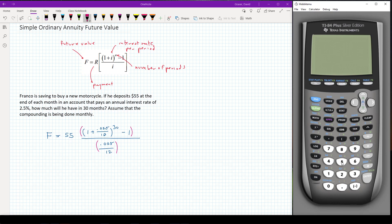So I'm going to start out and say 55 times big parentheses for the top, another set of parentheses, 1 plus 0.025 divided by 12, close the parentheses upstairs, and then raise that to the 30th power. Subtract 1, and now I end the parentheses for the top of the fraction. I'm going to divide that by parentheses 0.025 divided by 12, and close the parentheses.